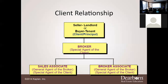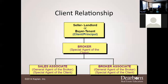The seller, landlord, buyer, or tenant is going to be the client. For them to be a client, there has to be a signed contract. If they don't have a signed contract, that person is called a customer. There has to be a broker — for example, Stefan as a salesperson is not a broker, so he cannot be the special agent in that principal relationship.